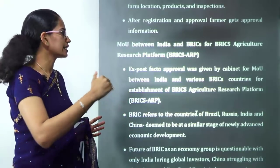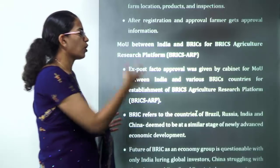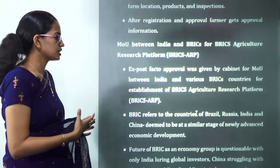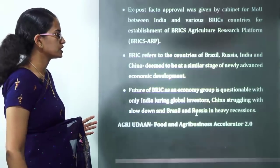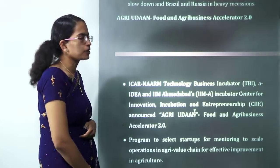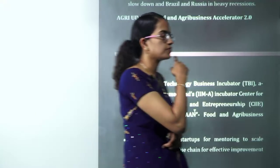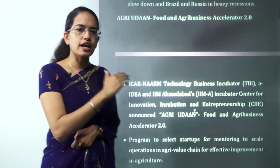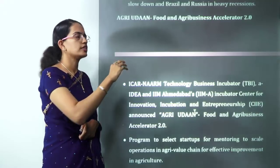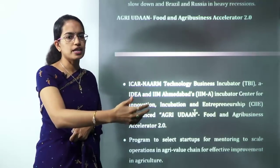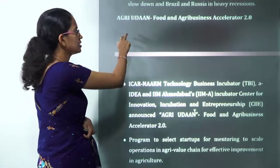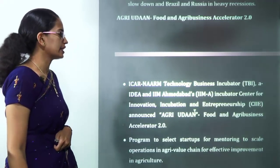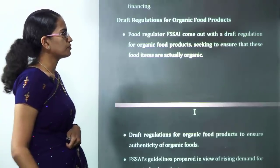BRICS ARP is the BRICS Agricultural Research Platform where Brazil, Russia, India, China, and South Africa together share agricultural research and developments. AGRI UDAN — not to be confused with other UDAN schemes — stands for Accelerating Growth of food and aGRIbusiness in India. One UDAN is for minority student scholarships and another is the aviation scheme; AGRI UDAN is specifically for agriculture and agribusiness.